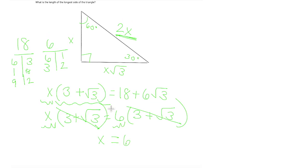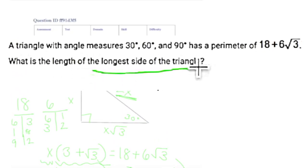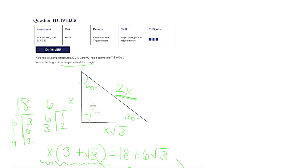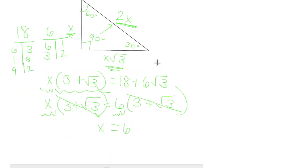But our problem's not done yet because we are looking for the longest side of the triangle. Now I know from geometry that the biggest angle is opposite the biggest side, but also we can compare this ratio and notice that root 3 is less than 2, so automatically this is going to be our biggest side. Even if we didn't remember that rule. So 2 times our x value, which is 6, equals 12. And there you go. Couldn't have done it without our handy dandy reference sheet.